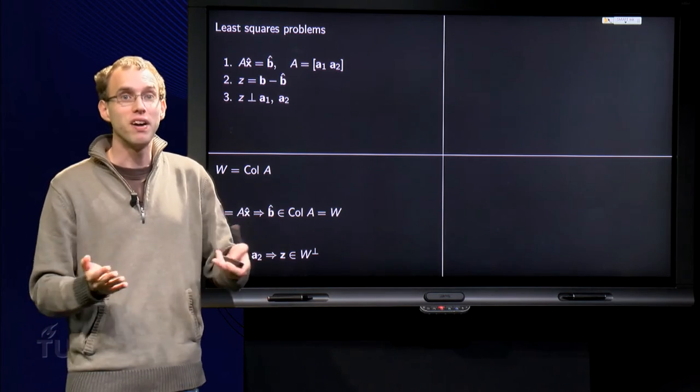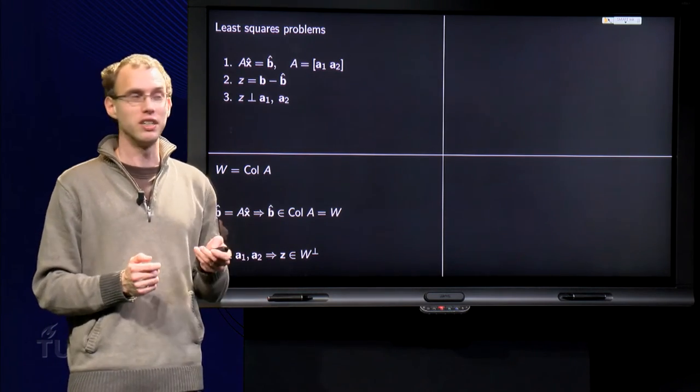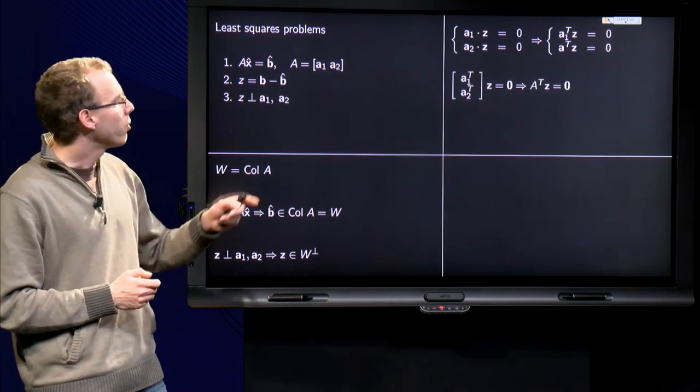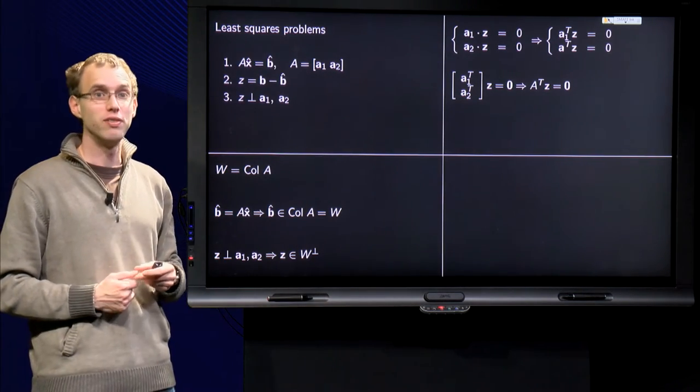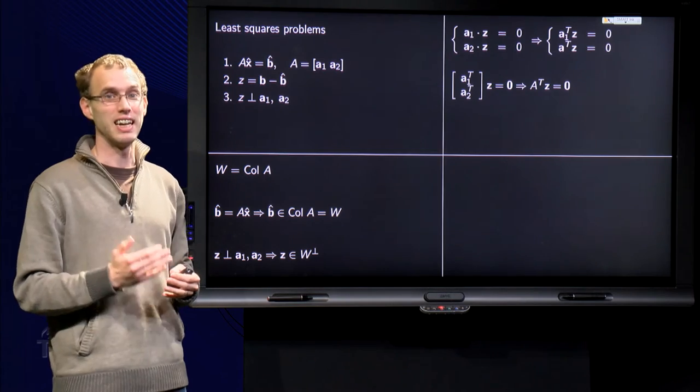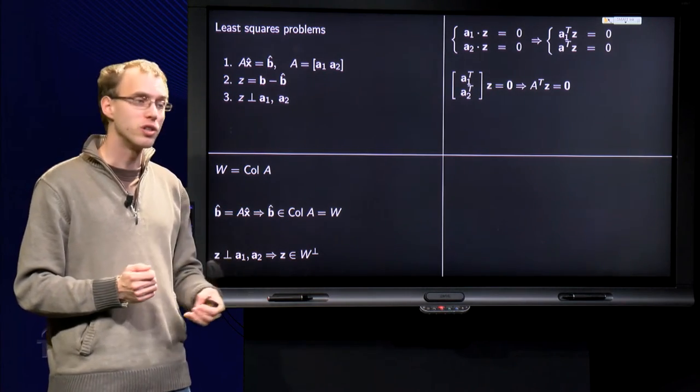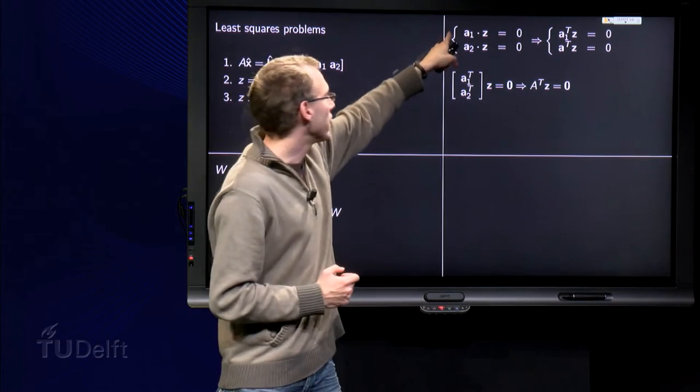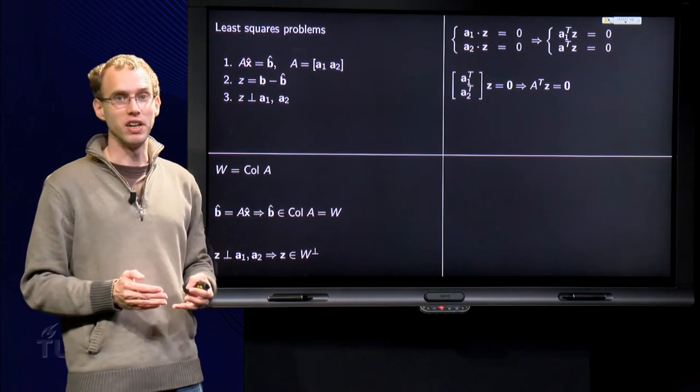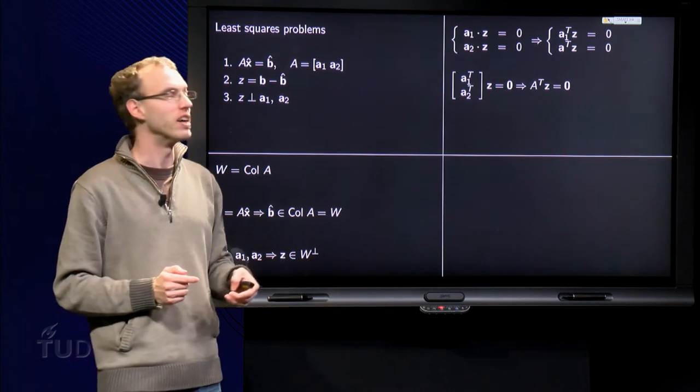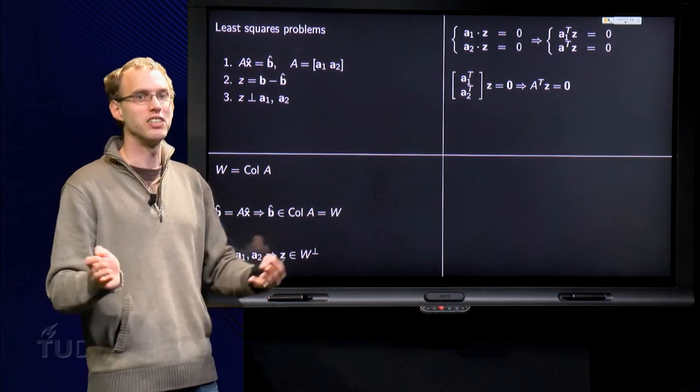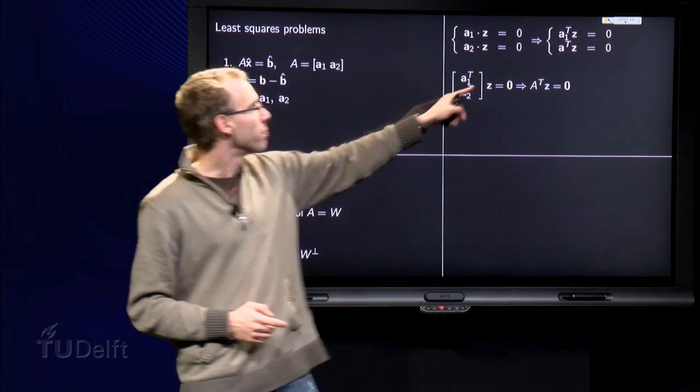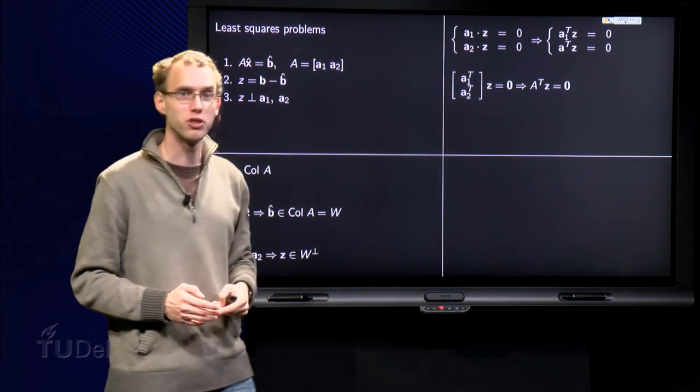But how can we find x hat using this decomposition? We know that both A1 and A2 are orthogonal to z, which means that the inner product with z has to be equal to zero. We also know that we can write an inner product as a matrix equation. A1 inner product z equals zero, translate into the matrix equation, A1 transpose times z equals zero, and similarly for A2.